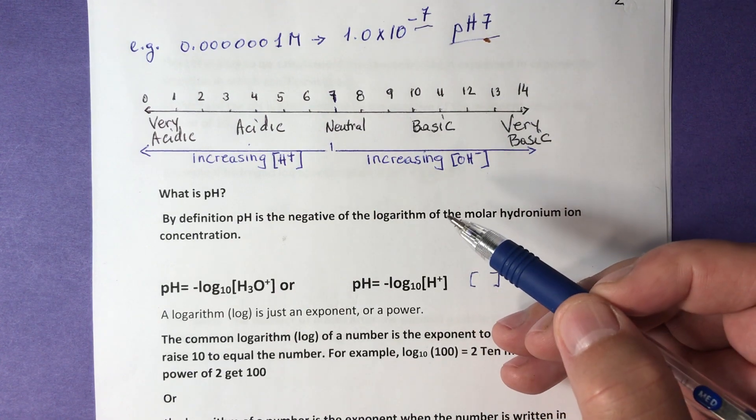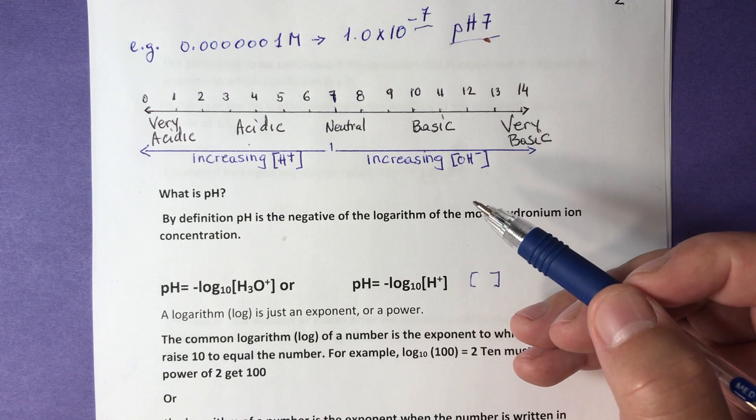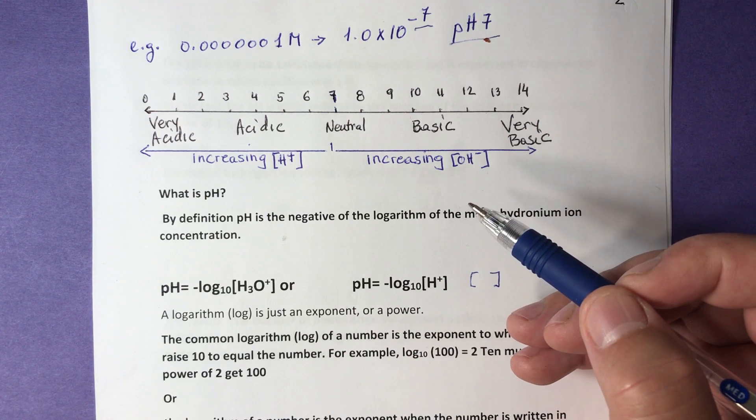pH is a logarithm to base 10, meaning that every increase by one pH unit corresponds to a concentration decrease by a factor of 10.